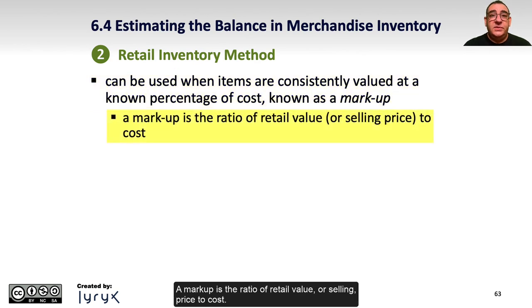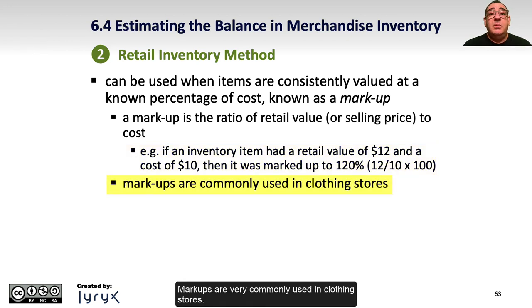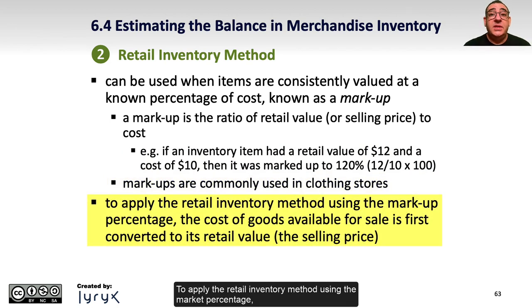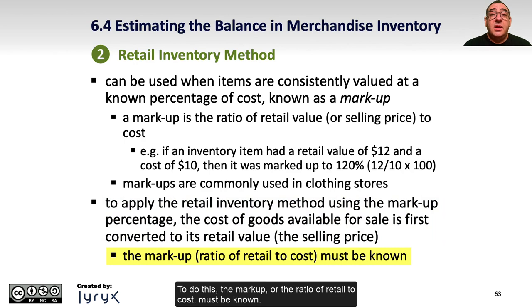A markup is the ratio of retail value or selling price to cost. For example, if an inventory item had a retail value of $12 and a cost of $10, then it was marked up by 120%, or 1.2, which is 12 divided by 10 times 100. Markups are very commonly used in clothing stores. To apply the retail inventory method using the markup percentage, the cost of goods available for sale is first converted to its retail value or selling price. To do this, the markup — the ratio of retail to cost — must be known.